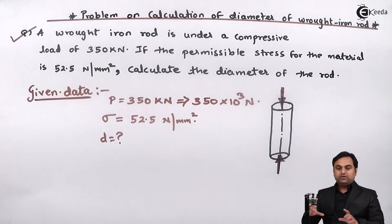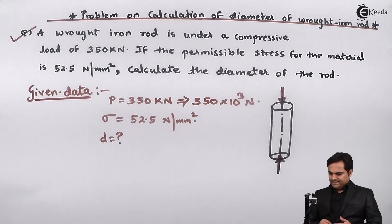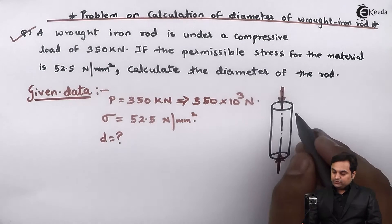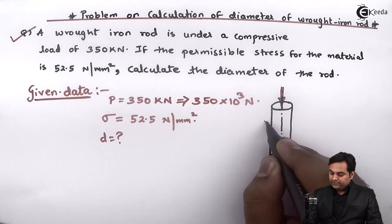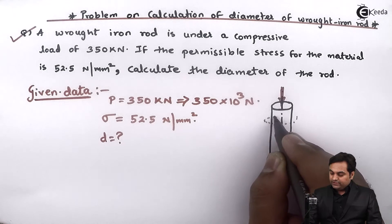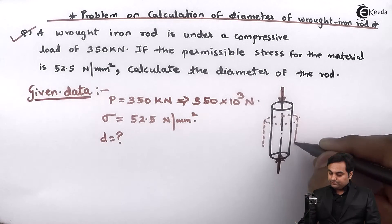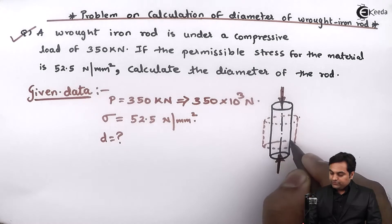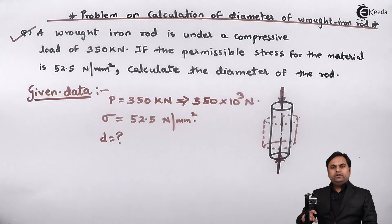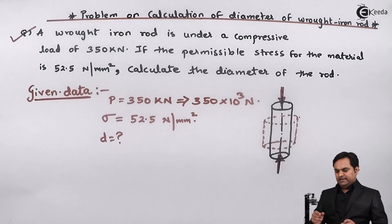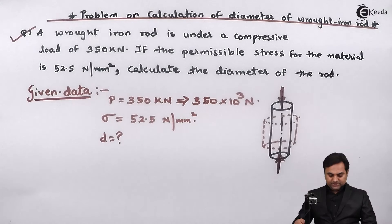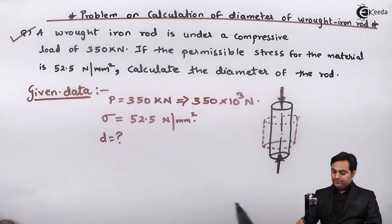which is trying to compress this rod. Now when the compressive load is acting then there are chances of the length to decrease and diameter to increase. So this is the effect of compressive load that the length will go on decreasing and diameter will go on increasing. So we have to find out under this compression how much will be the diameter of this rod